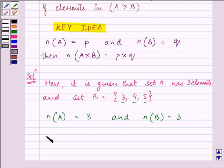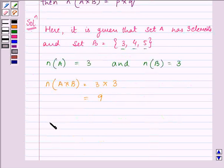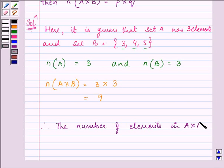In this question, we need to find the number of elements in A cross B that will be 3 multiplied by 3 that is 9. So, the answer will be, the number of elements in A cross B is 9.